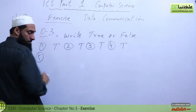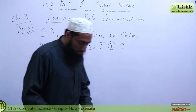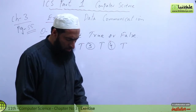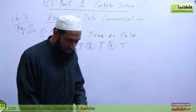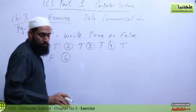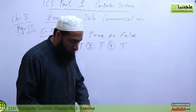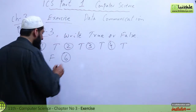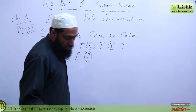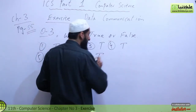Statement 5: Transmission of signals across a communication medium is called signaling — this is false. Statement 6: The voice channel has a bandwidth of 0 to 233 — this is also false. Statement 7: Synchronous transmission is much faster than asynchronous — this is true. Synchronous is always faster than asynchronous.